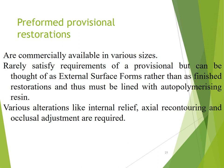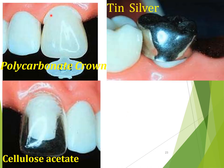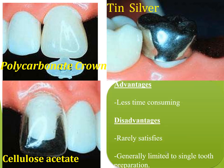Pre-formed provisional restorations are commercially available in many sizes but don't really satisfy the requirements of provisional restorations, though they can sometimes be lined with auto-polymerizing resins. Various alterations like internal relief, axial recontouring, and occlusal adjustments are required. Materials used to make preformed provisionals include polycarbonate, cellulose acetate, aluminum, tin silver, and nickel. The advantage is that they are less time consuming; disadvantages are that they rarely satisfy the patient and are generally limited to single tooth preparations.